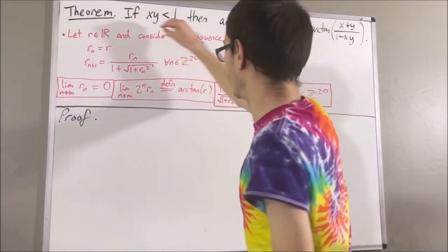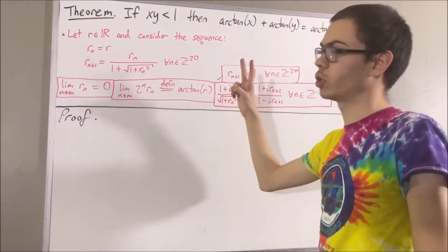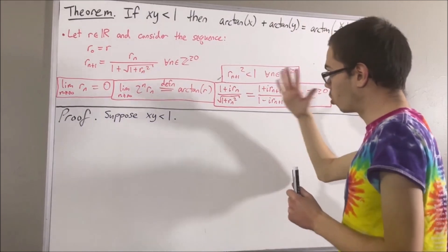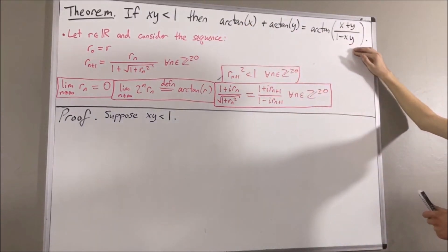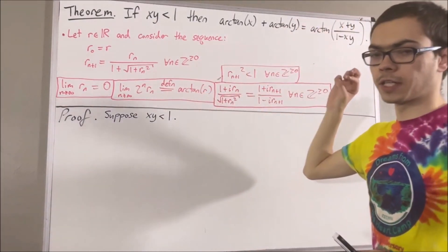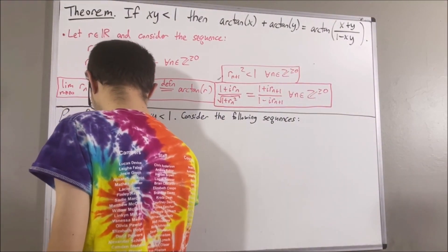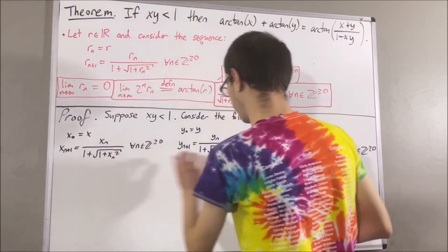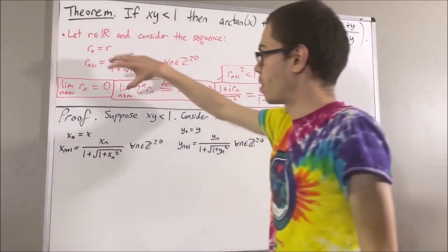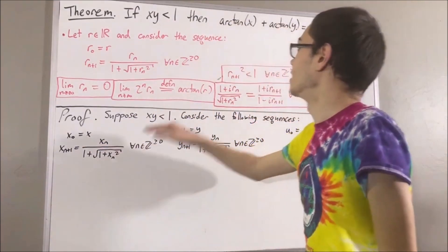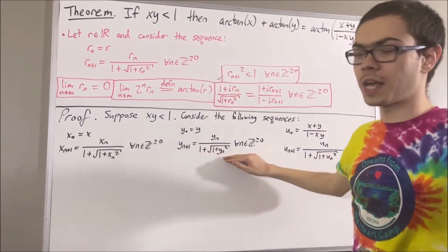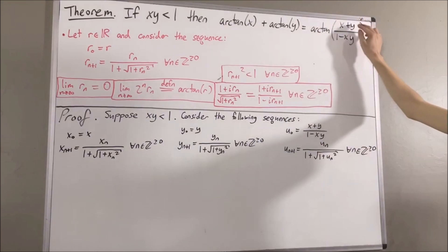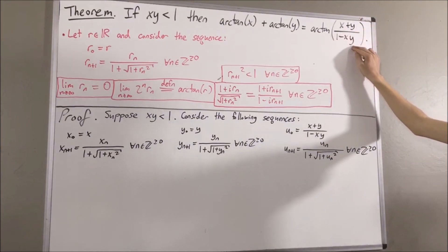Now let's get into proving this theorem. To start the proof, let's consider two arbitrary real numbers x and y, and suppose x times y is less than 1. The whole goal is to prove this equality. Let's consider defining three sequences as follows. By definition, the limit of 2 to the n times xn is equal to arctangent of x, the limit of 2 to the n times yn is equal to arctangent of y, and the limit of 2 to the n times un is equal to arctangent of x plus y all over 1 minus x times y.